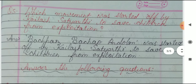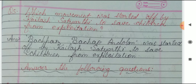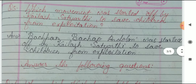We have the fifth question: which movement was started by Kailash Satyarthi to save children from exploitation? Kailash Satyarthi के द्वारा बच्चों को शोषण से बचाने के लिए Bachpan Bachao Andolan शुरू किया गया था।